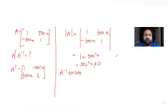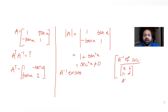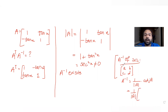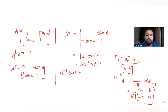Here's a trick to find the inverse of a 2x2 matrix. If a matrix is [a, b; c, d], then A inverse equals 1 divided by the determinant of A, multiplied by the adjoint of A. For the adjoint, you rewrite the elements as [d, -b; -c, a].